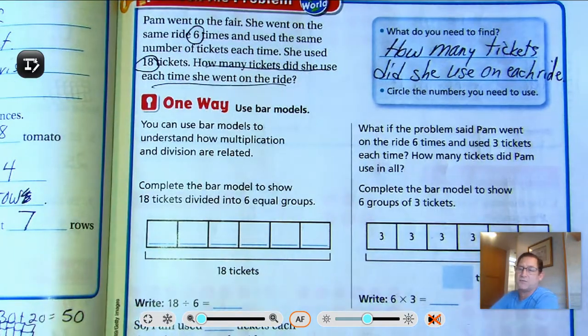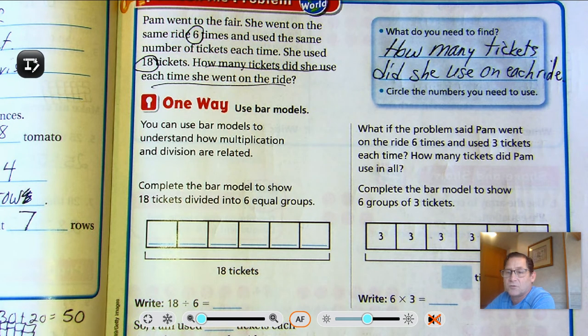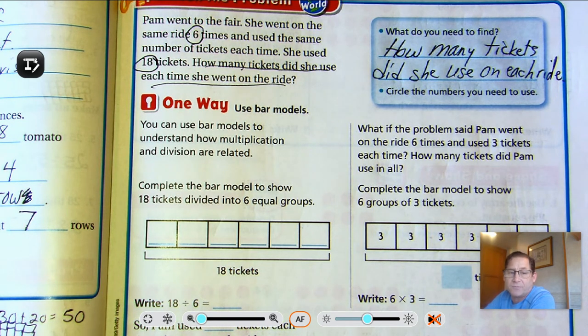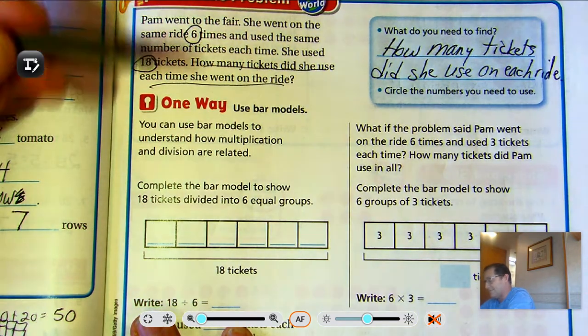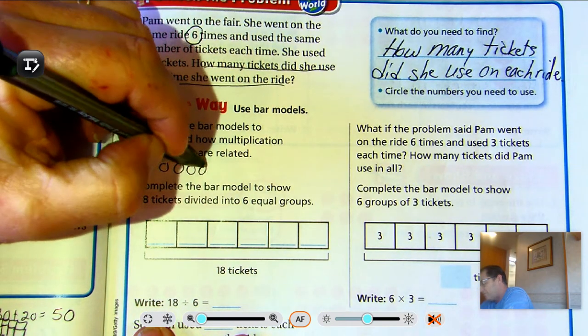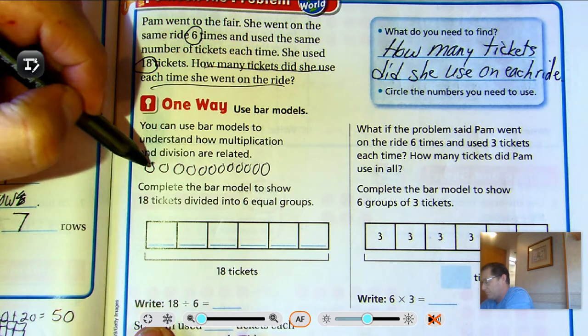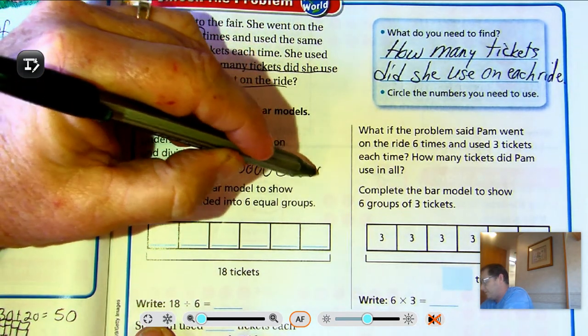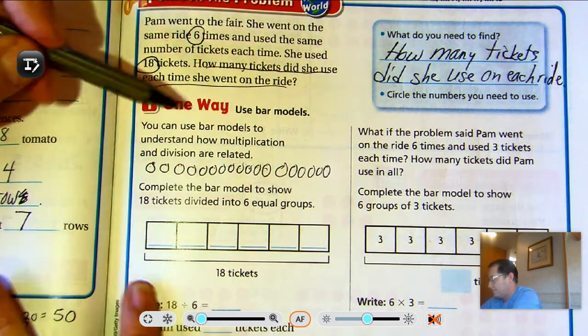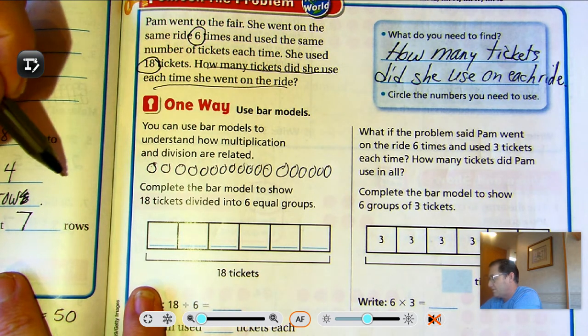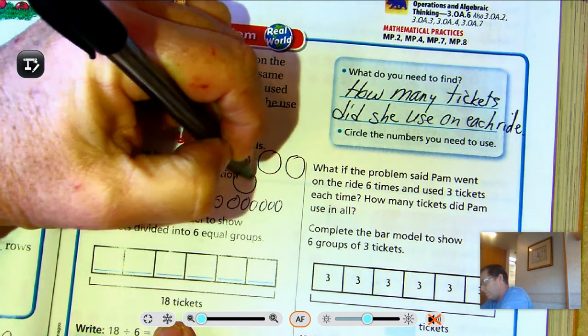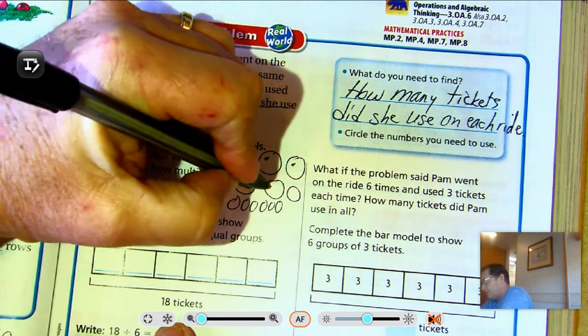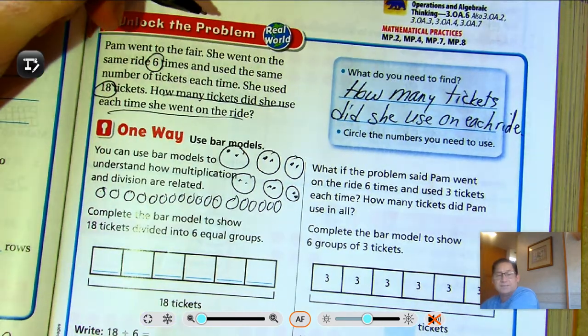In the blue box, it asks us, what do you need to find? Remember that's just the question of our math problem. Circle the numbers you need to use. So six times she rode the ride and she used a total of 18 tickets. One way we can solve that is to use bar models, like we did in our previous lessons. You can use bar models to understand how multiplication and division are related. Complete the bar model to show 18 tickets divided into six equal groups. Well, if we're not sure about this, we can list 18 counters and put them into six equal groups.